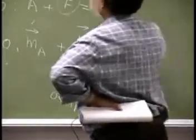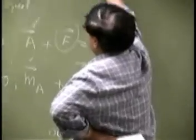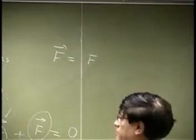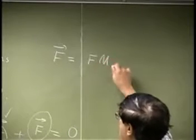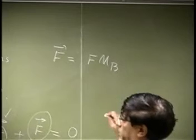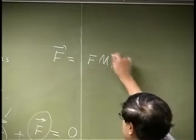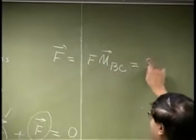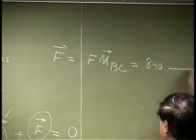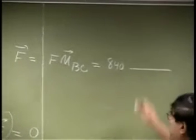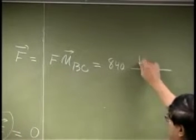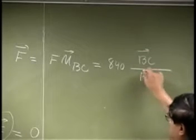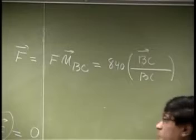So, let's look at the force. Your force vector will be the force magnitude multiplied by a unit vector going from point B to C. And that's going to be 840, magnitude is known, and a vector, which is BC, divided by its magnitude.